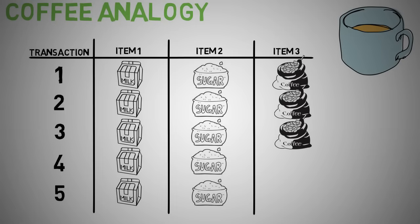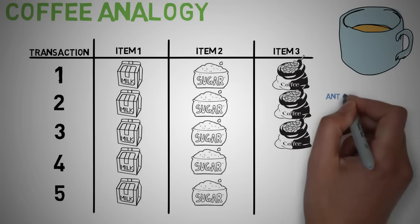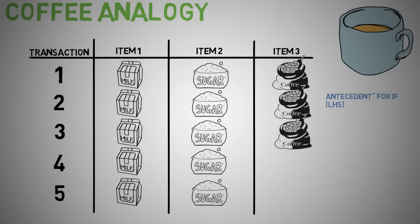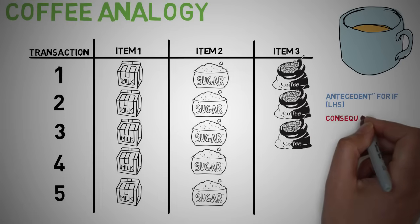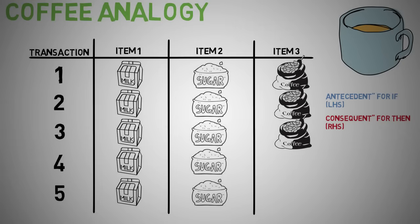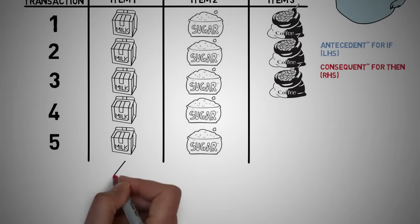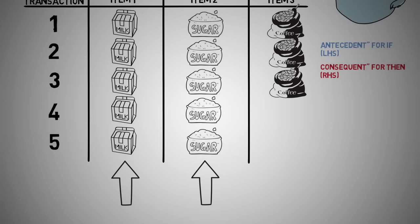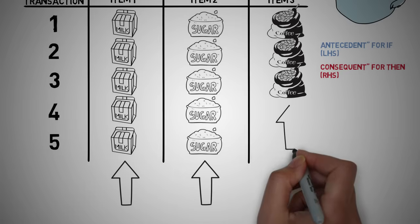Generally, association rules are written in an if-then format. We can also use the term antecedent for 'if' (left-hand side) and consequent for 'then' (right-hand side). From the above rules, we understand the following: whenever milk is purchased, sugar is also purchased or vice versa, and if milk and sugar are purchased, then coffee powder is also purchased.